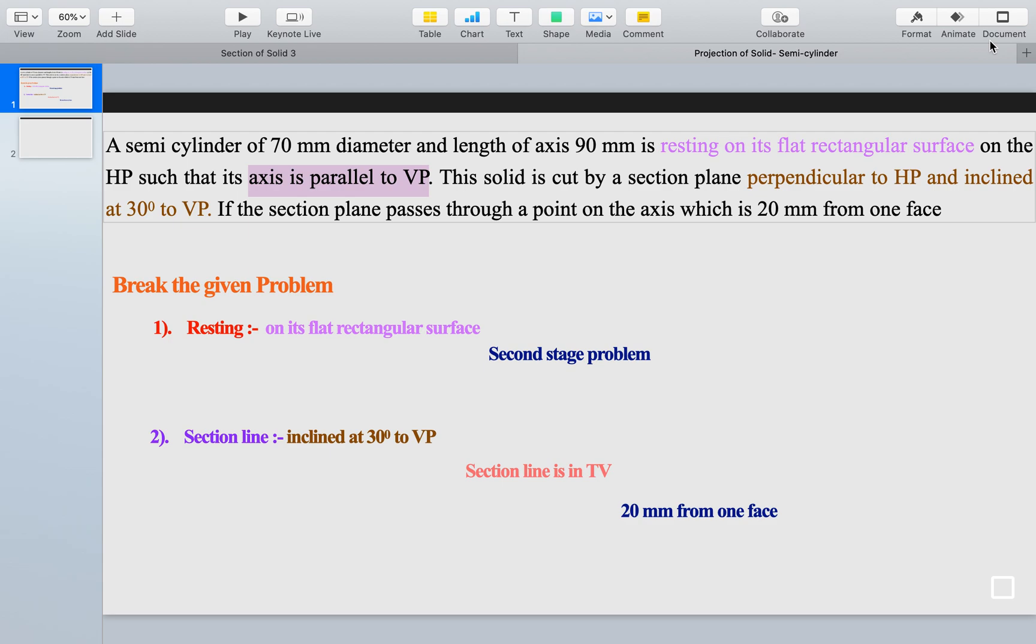This solid is cut by a section plane perpendicular to HP. We will get a good amount of the idea. But if you read further, you will realize from where - in front view or in top view - the section line is. So perpendicular to HP and inclined at 30 degrees to VP.